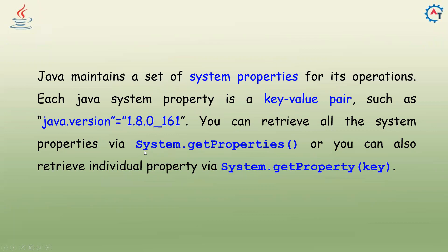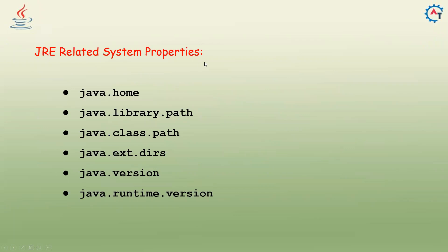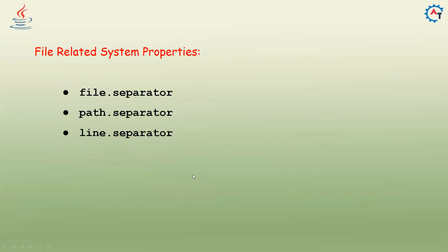So if you call System.getProperties() it will give all the properties, but if you want only a specific property then you use System.getProperty() and mention that key to get the value. JRE related system properties include: java.home, java.library.path, java.class.path, java.ext.directories, java.version, java.runtime.version. File related system properties include: file.separator, path.separator, line.separator.